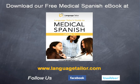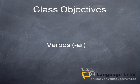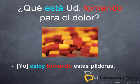Let's start. Los verbos AR en acciones progresivas. In English, this is equal to the ing form. Ejemplos: ¿Qué está usted tomando para el dolor? Yo estoy tomando estas píldoras.